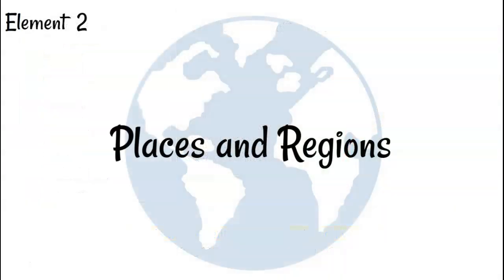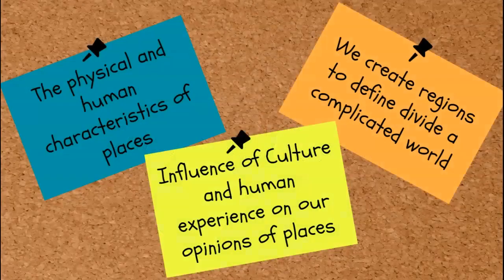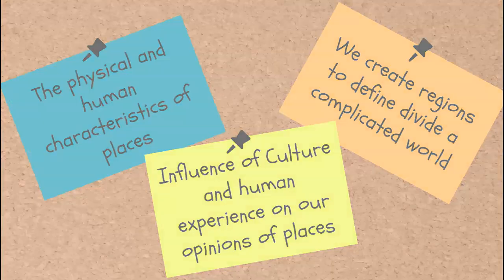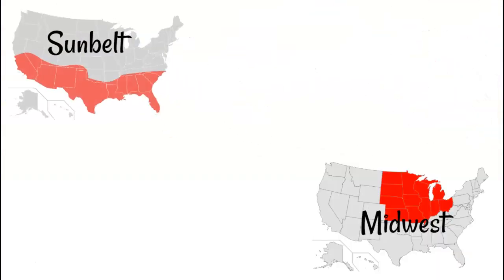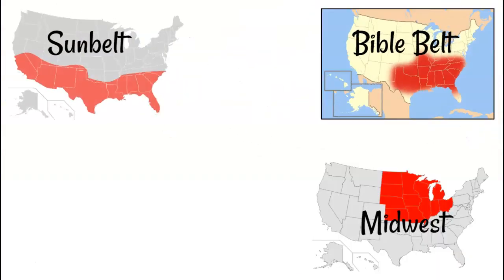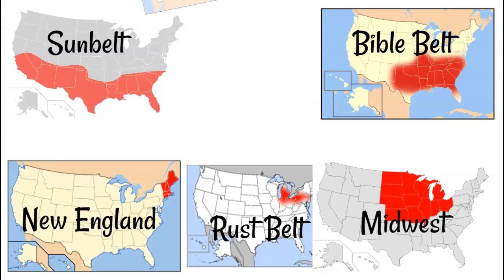The second theme of geography is places and regions. You live in a particular place, Bluffton, South Carolina. The town has a name, your home has an address, and you also live in a region. A region is not a specific place — it is a way of thinking about a group of places that have something in common.